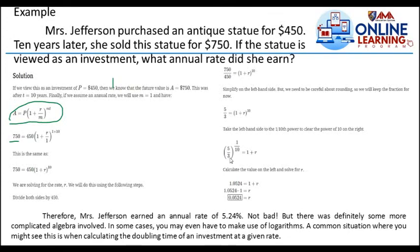So we have 5 over 3 to the 1 over 10 equals 1 plus R. By using our calculator, calculate the value on the left and solve for R. So 1.0524 equals 1 plus R. Then 1.0524 minus 1 equals R, so we have 0.0524.